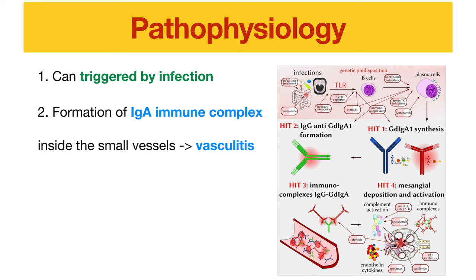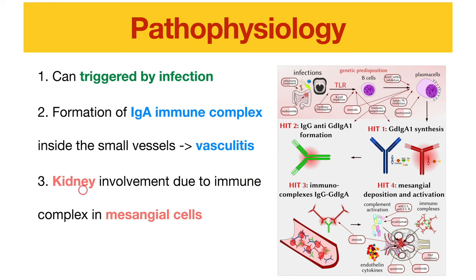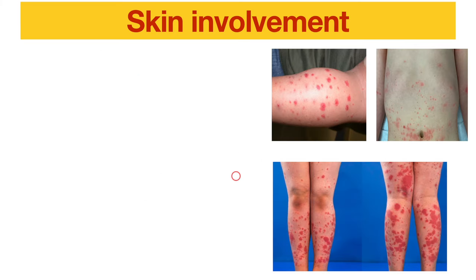HSP has different organ presentations because it involves blood vessels inside different organs. Kidney involvement is mainly due to immune complexes inside the mesangial cells of the kidney, leading to nephritis or proteinuria. Skin involvement occurs in 100% of patients and is essential for diagnosis.